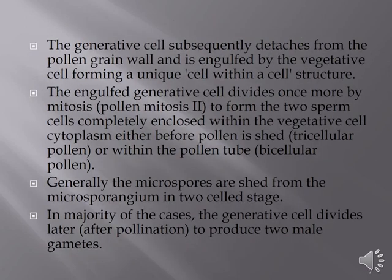The engulfed generative cell divides once more by mitosis in a cell-within-cell structure to form two sperm cells, which are completely enclosed within the vegetative cell cytoplasm either before pollen is shed or within the pollen tube. Generally, microspores are shed from the microsporangium in the two-celled stage; however, in some other cases the generative cell divides later to produce two male gametes.